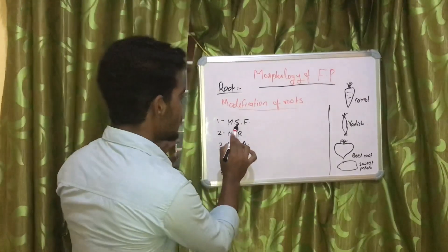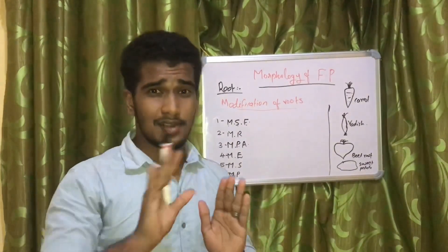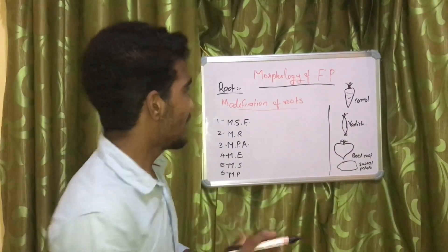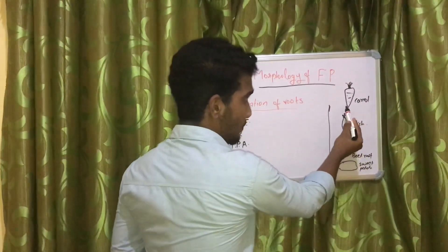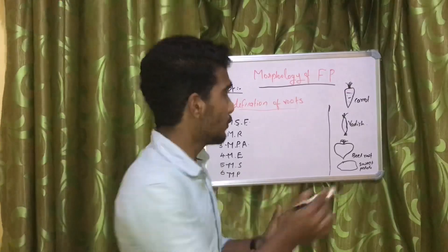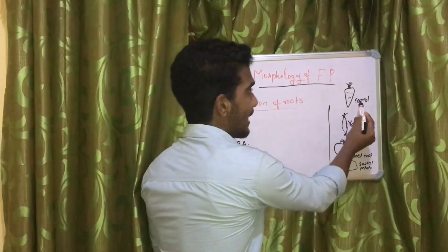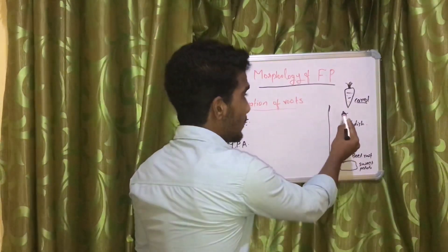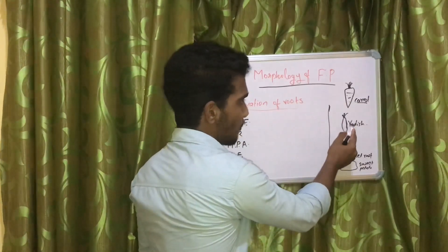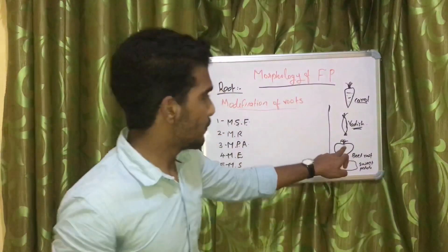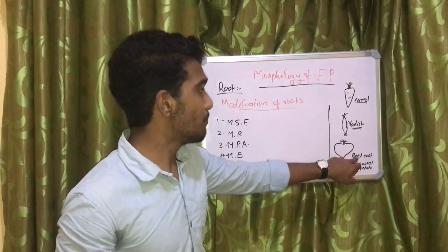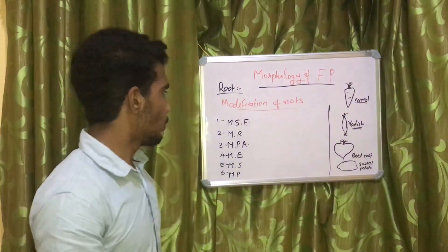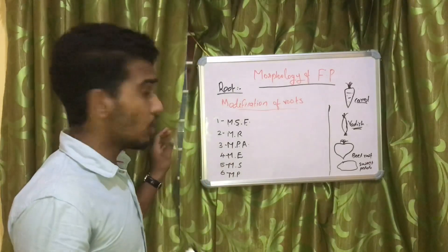We are discussing modification for storage of food. Based on structure, there are 4 types. Conical shape — this is called conical; example: carrot, very important for NEET. Napiform shape — example: radish. Fusiform shape — example: beetroot or turnip. Tuberous shape — example: sweet potato.